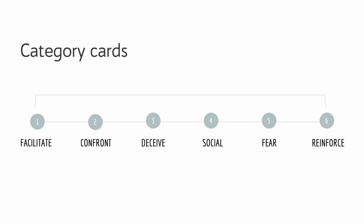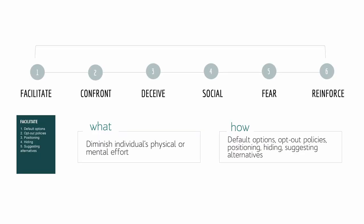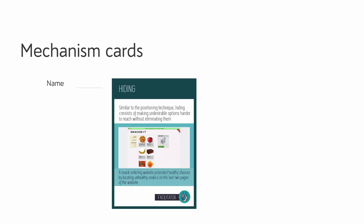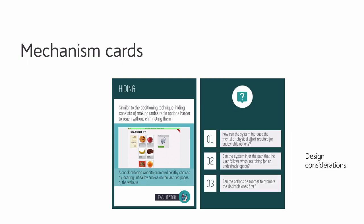Category cards represent 6 nudging categories and are color-coded to simplify recognition. Category cards present the what — for instance, 'facilitate' aims at diminishing individuals' physical or mental effort to pursue a behavior. The how is presented in Mechanism cards. Each Mechanism card describes the 23 nudge mechanisms proposed by the framework. The front of the card presents the name, description, and example. The backside lists design considerations, hints and suggestions that can trigger discussion within the design team.